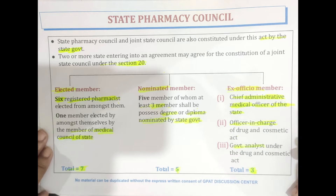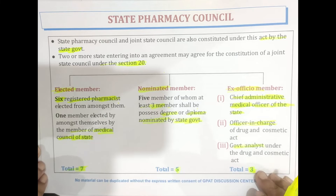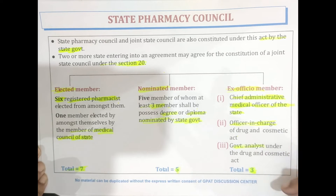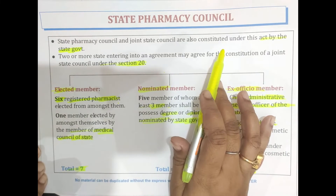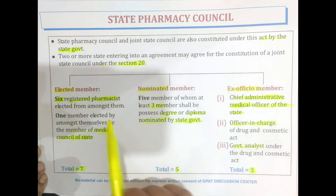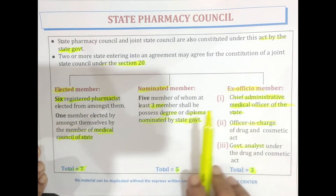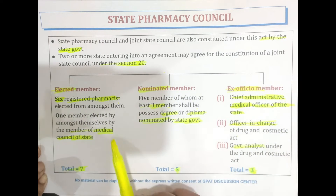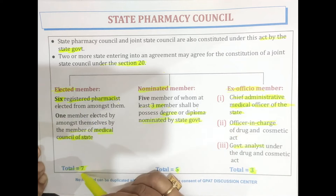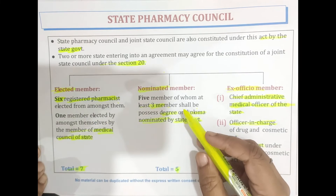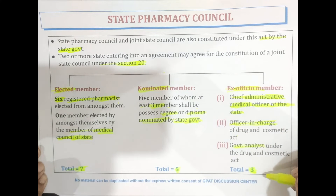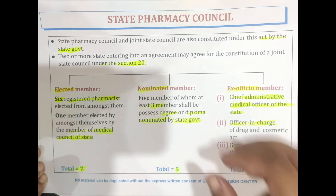So the State Pharmacy Council is constituted by three types of members: elected, nominated, and ex officio. The elected members total seven, nominated members total five, and ex officio members total three.